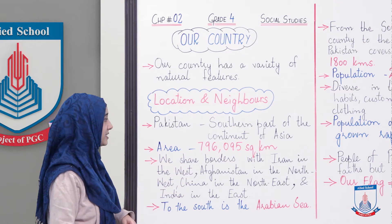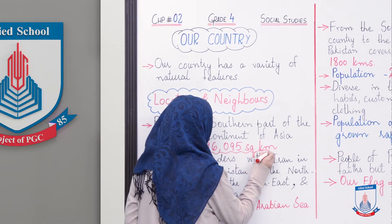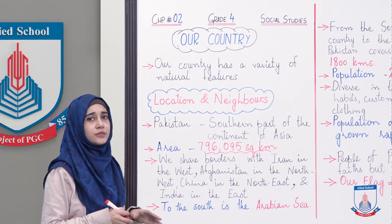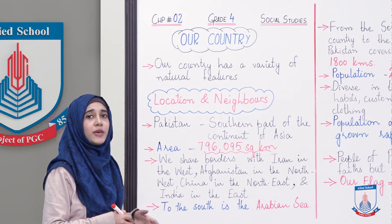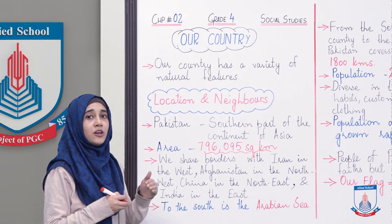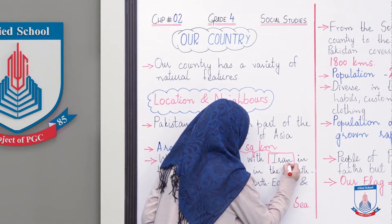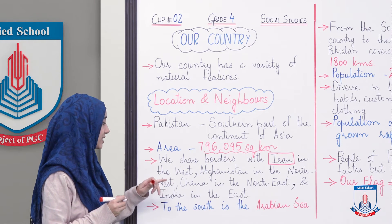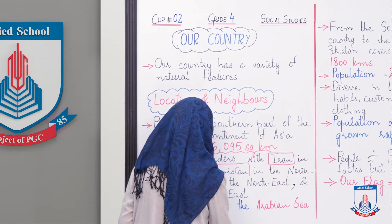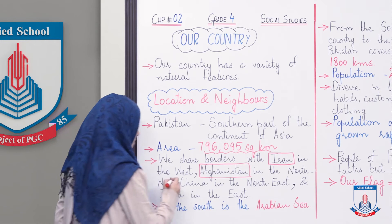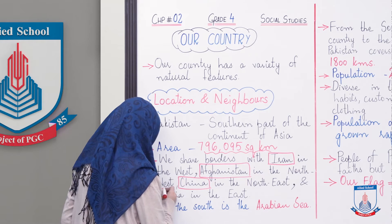Humaare mulk ka area kitna hai — that is 7,96,095 square kilometers. Bachon aap ne yeh figure zaroor yaad rakhna hai kyunki yeh aam taur par MCQs ya fill in the blanks mein laazmi aa jaata hai. Then we share borders with Iran in the west, Afghanistan in the north west, China in the north east, and India in the east.